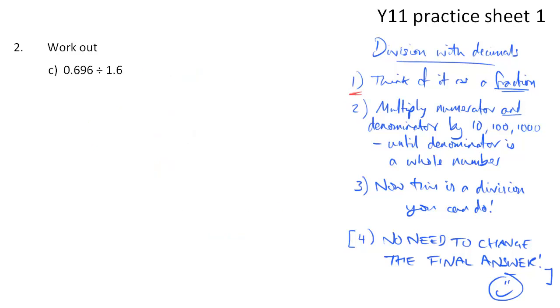Part c, let's go. Think of it as a fraction. So I'll write it as 0.696 divided by 1.6. If I want to make that into a fraction with a whole number, an integer on the bottom, the obvious number is going to be 16. So I'm going to have to multiply top and bottom by 10. So I'll do that with the numerator. We're going to get 6.96. So now this is a sum that I can do.